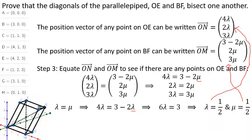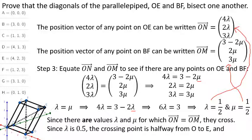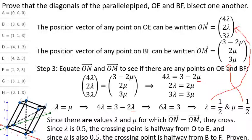So there is a point that's on both lines. This is the key idea here. Since there are values lambda and mu for which ON equals OM they cross. In other words N and M are the same point. Moreover because lambda is 0.5 the crossing point is halfway from O to E and for the same reason mu is 0.5 so the crossing point is halfway from B to F. The intersection point is also a bisection point. It cuts each of the two diagonals exactly in half and that's what we were asked to prove.